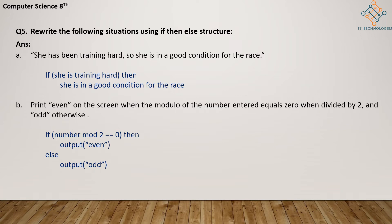So 'mod' means remainder. If number mod 2 is equal to 0, then output 'even'; otherwise, else output is 'odd'. The number divided by 2 gives remainder 0 for even numbers; where the remainder is 1, the else part applies — the result is odd.